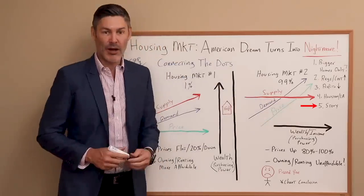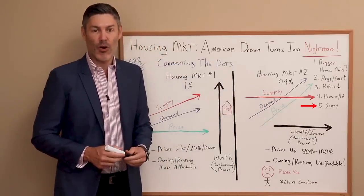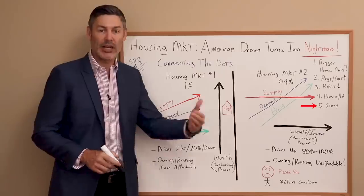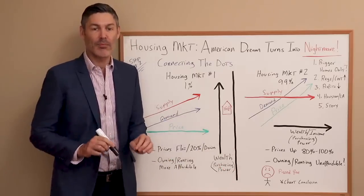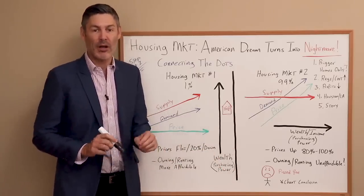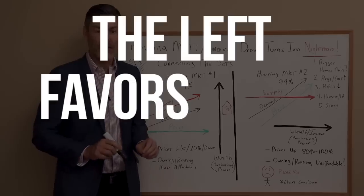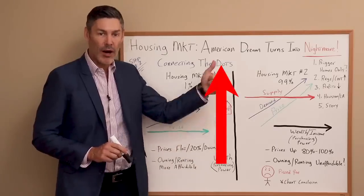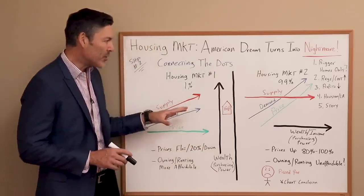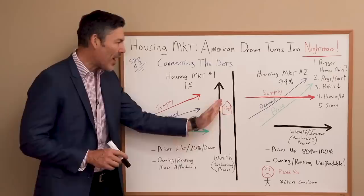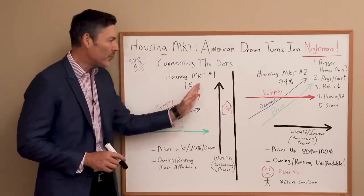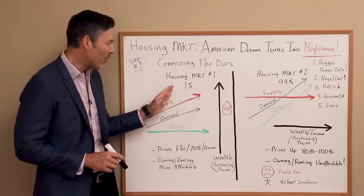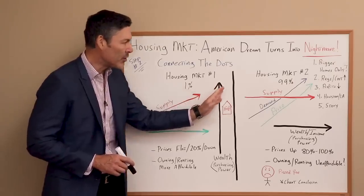I can tell you from personal experience, this is what's going on in places like California, Oregon, Washington, and all of these urban areas. The bottom line is the left favors these restrictions that make housing prices go up. So the housing market has really been divided into two completely separate components — I like to think of it as housing market one and housing market two. Housing market one is specifically for the 1% of earners. Housing market two is for the rest of us, the 99%.